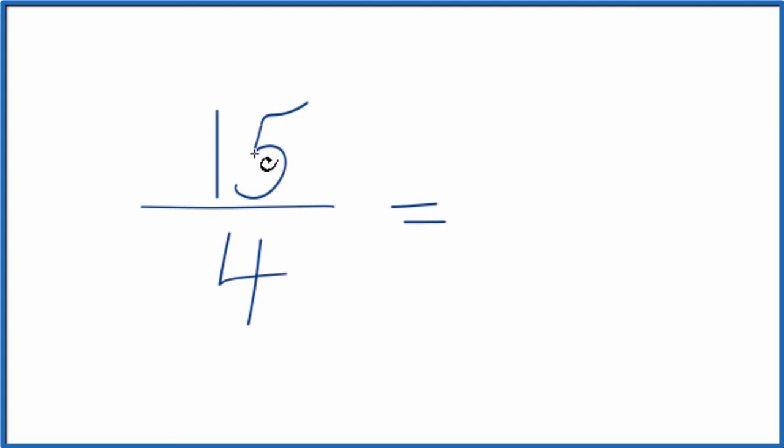So we'll take 15 and divide that by 4. 4 goes into 15 three times. 3 times 4 is 12. So we'd have 3 left over. Bring the denominator there across. And 15 fourths equals the mixed number 3 and 3 fourths.